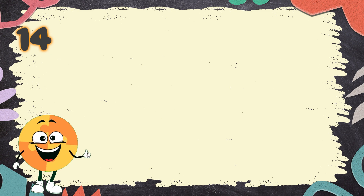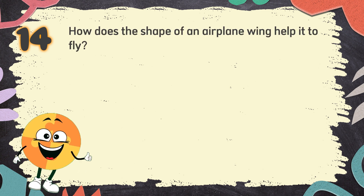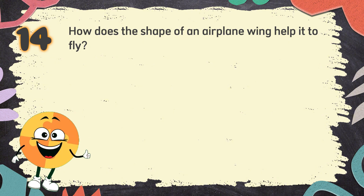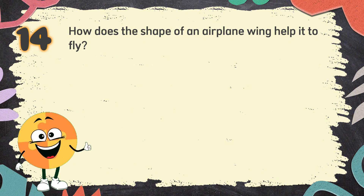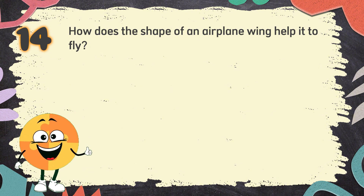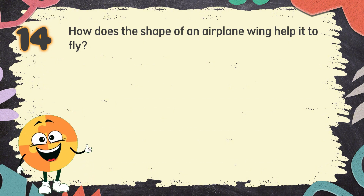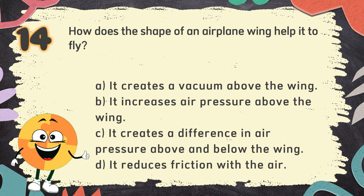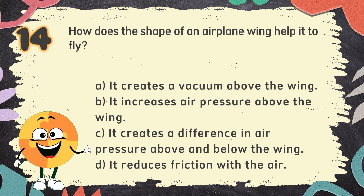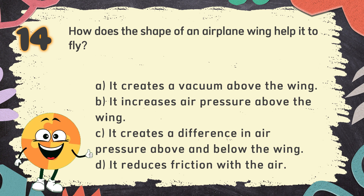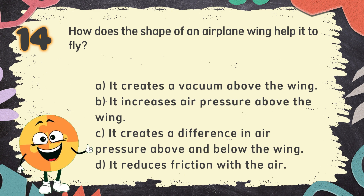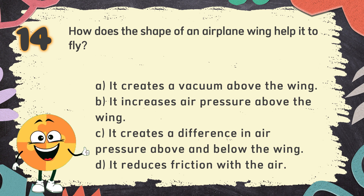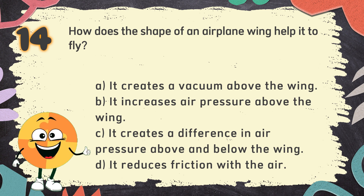Number 14. How does the shape of an airplane wing help it to fly? The choices are: A. It creates a vacuum above the wing, B. It increases air pressure above the wing, C. It creates a difference in air pressure above and below the wing, D. It reduces friction with the air.